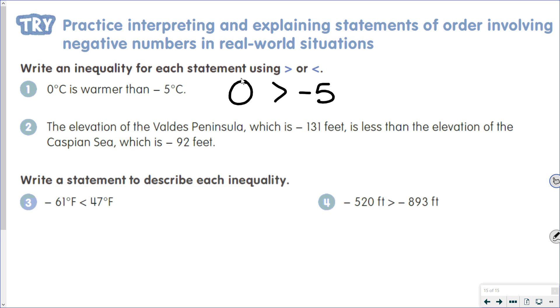The elevation of the Valdez Peninsula, which is negative 131 feet, is less than the elevation of the Caspian Sea, which is negative 92 feet. So negative 131 is less than negative 92.